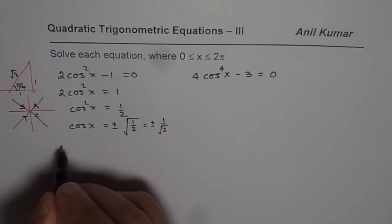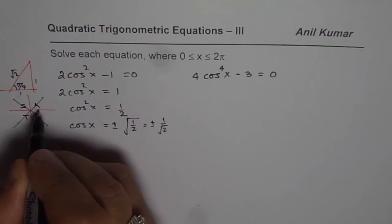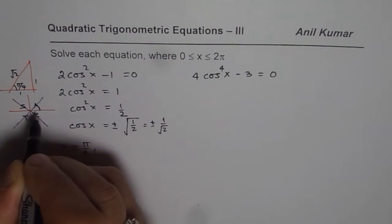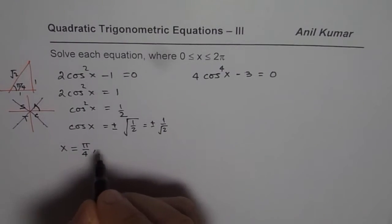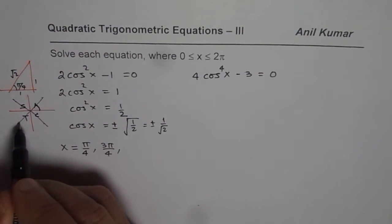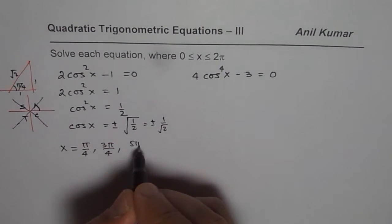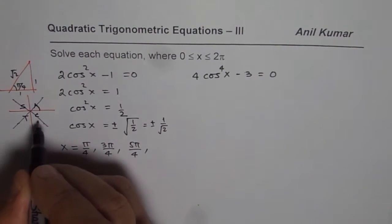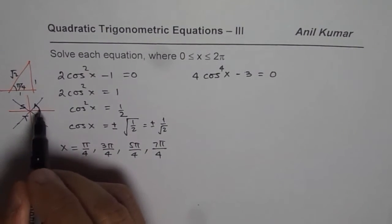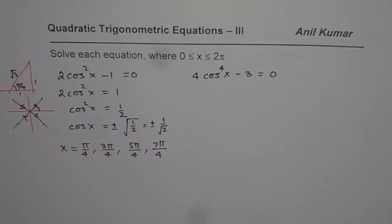We can write straight away the solutions. x = π/4, then we have 3π/4, 5π/4, and 7π/4. So these are the four solutions for which 2cos²x - 1 = 0.